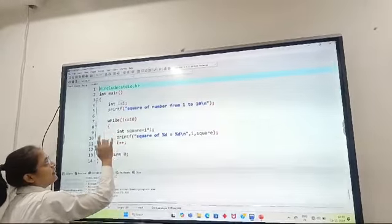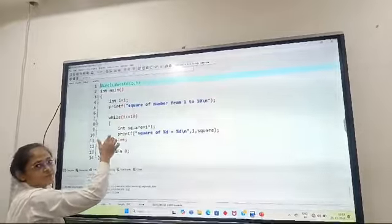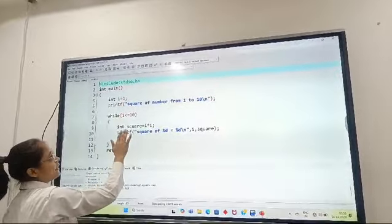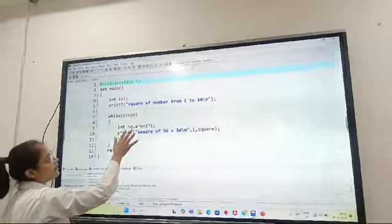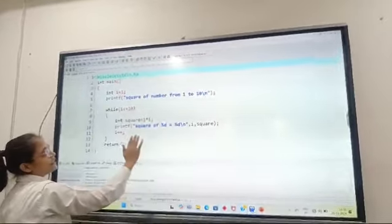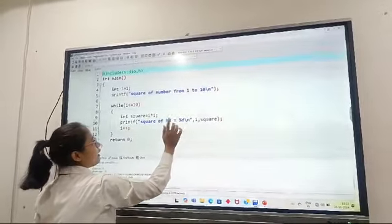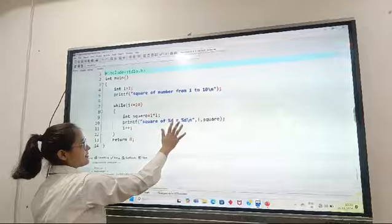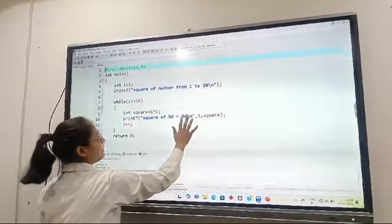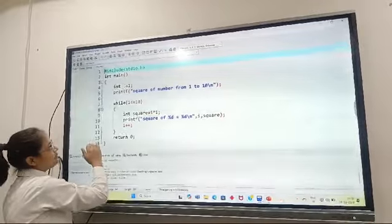less than or equal to 10, then we will go inside the loop. Here the condition is true so we will go inside the loop. Here I have declared one more variable square, which is of integer data type. Then I print 'square of %d equal to %d' - this i will replace the first %d and square will replace the second %d. After that, increment takes place.